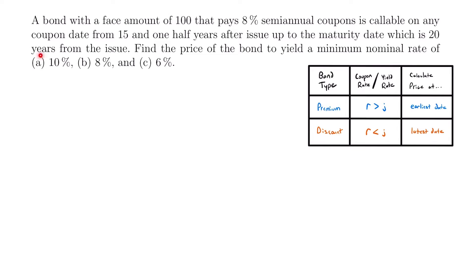Let's start with Part A, with the nominal yield rate of 10%. In order to get the actual effective semi-annual yield rate, we divide by 2. So for Part A, J is equal to 0.10 divided by 2, which equals 0.05.